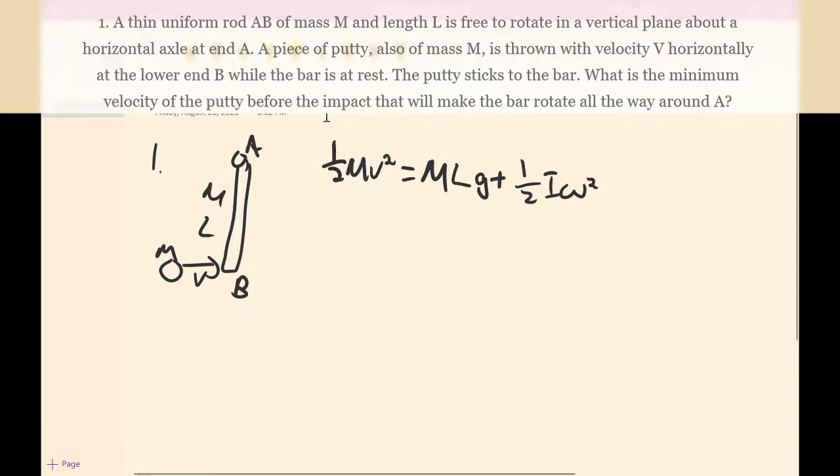And then we also can use conservation of angular momentum: I omega is equal to MLv. This one is pretty easy to see. Before, the angular momentum is just MLv and afterwards it's I omega.